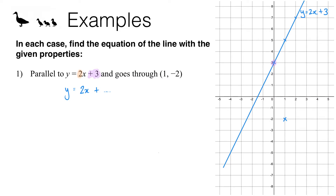How can we work out what that intercept will be? Looking at the original line, if you look at the point that has an x-coordinate of 1 you'll see we've got the point (1, 5). The parallel line needs to go through the point (1, -2), which is 7 steps lower. So we're going to have to do the same thing to the intercept — we are going down 7 steps from 3, and that will get us to negative 4. So the y-intercept is negative 4.